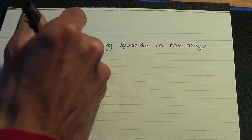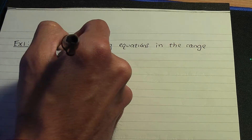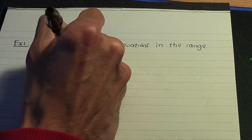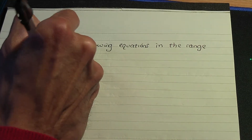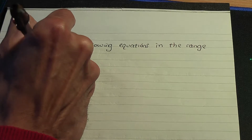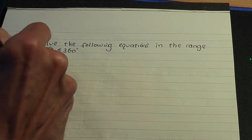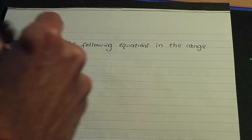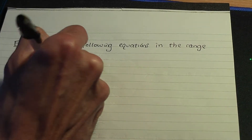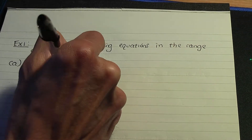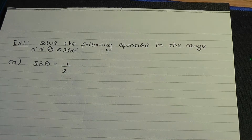The range in this case is all of the thetas — theta is an angle — between 0 and 360 degrees inclusive. And here's part A, the first example: sine theta is equal to 1 over 2.